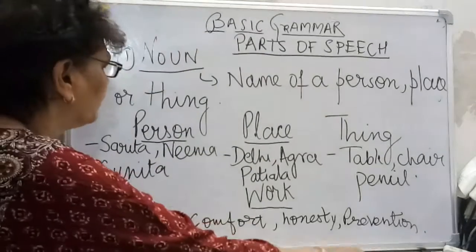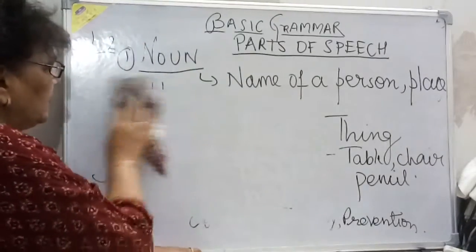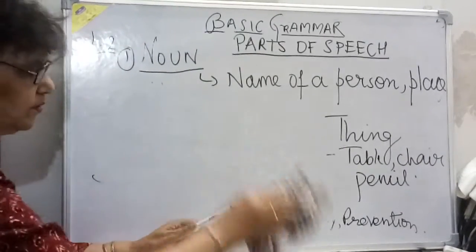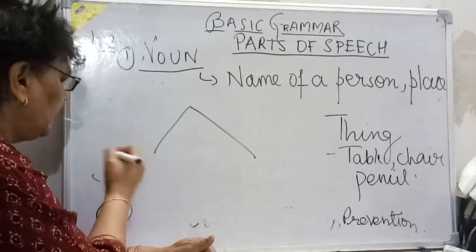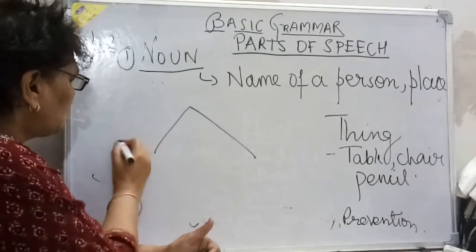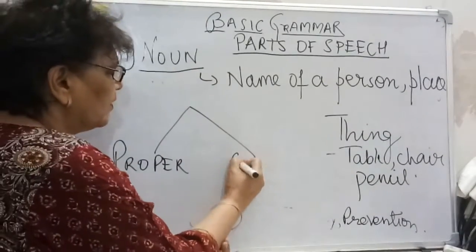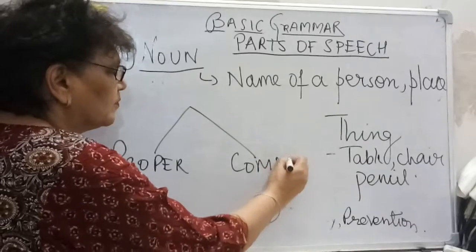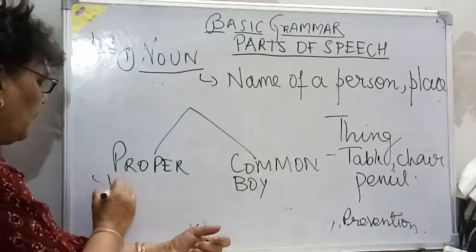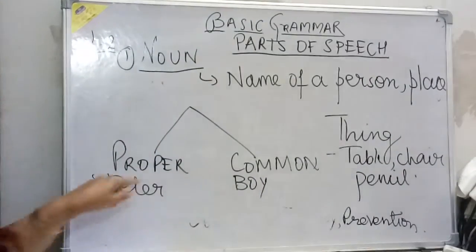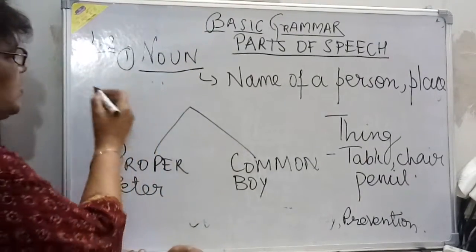There are two types of nouns. These are the basic units for beginners. First is Proper Noun and Common Noun. For example, 'boy' is a common noun and 'Peter' is a proper noun. This distinction is important for your assignment.